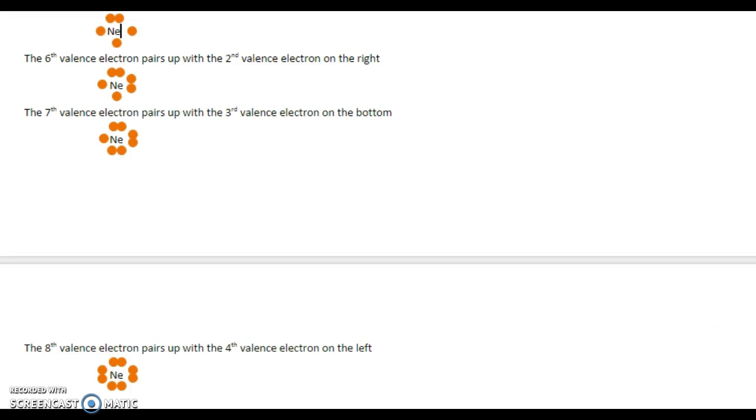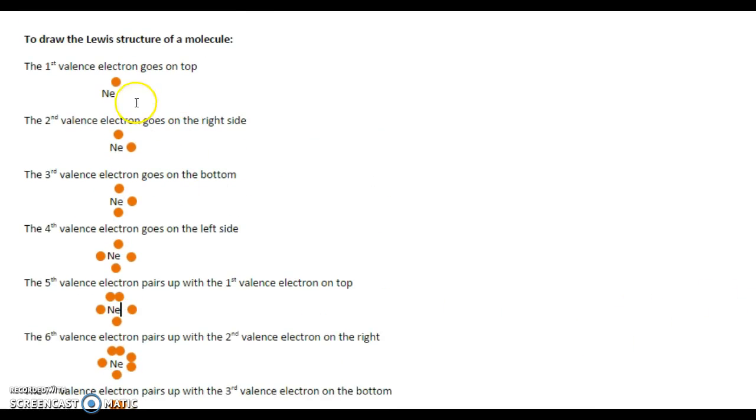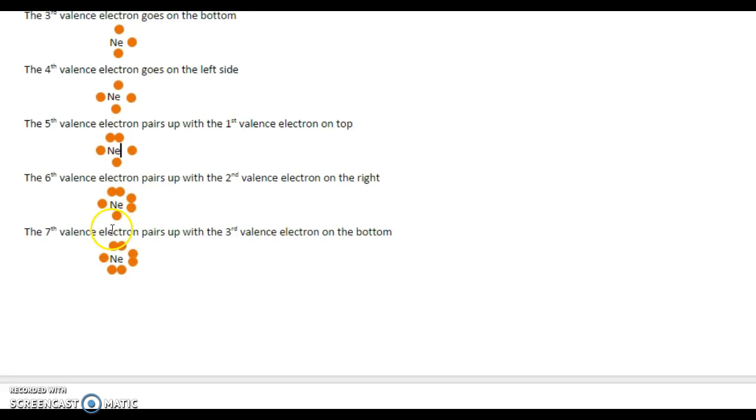It's very important that you have the first four be alone because what charge do all electrons have? Negative. So do they attract or repel? They repel. So they don't want to be by each other. So in order to double up, one of them has to flip its spin or basically spin the other way so that they can be next to each other. And that takes energy. And remember, everything in nature wants to do what takes the least amount of energy. So they don't pair up until they have to.